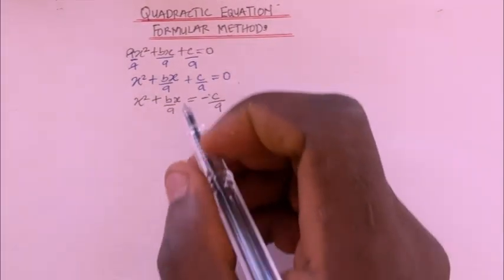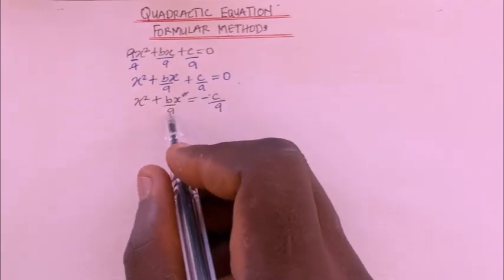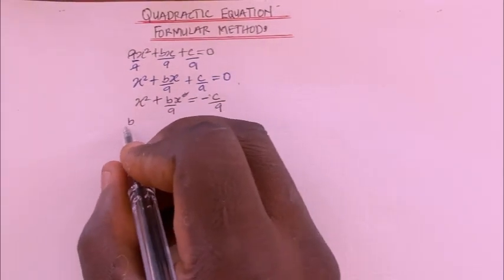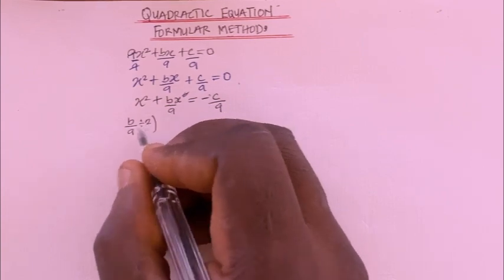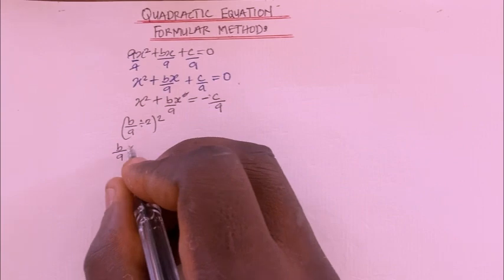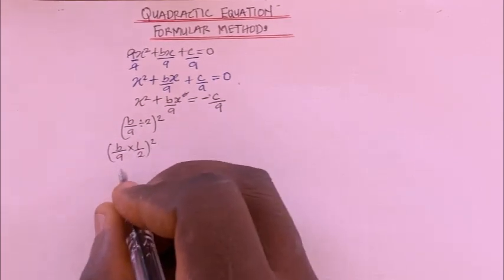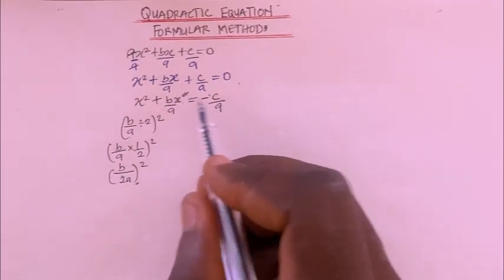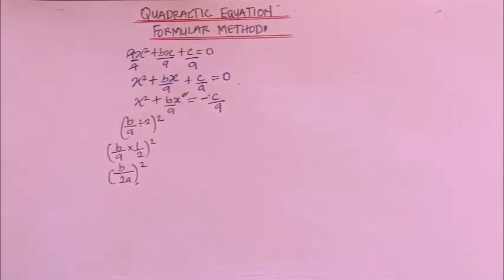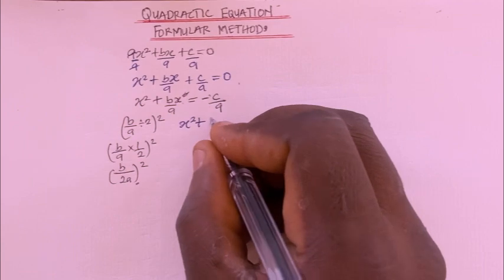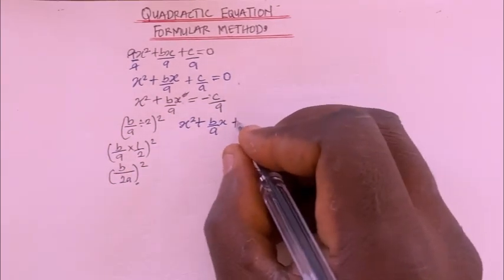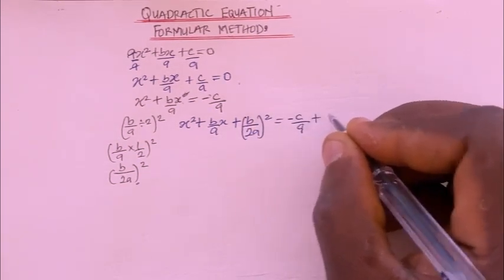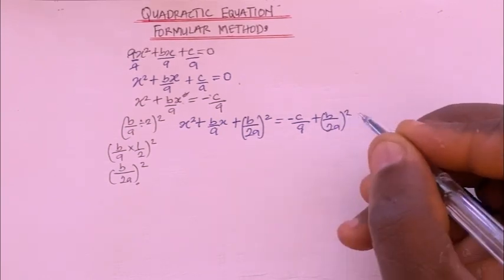Now the next thing is to take the coefficient of x, which is b/a, divide it by 2, and square it — giving (b/2a)². I'm going to add this to both sides of the equation, so I'll have x² + (b/a)x + (b/2a)² = -c/a + (b/2a)².